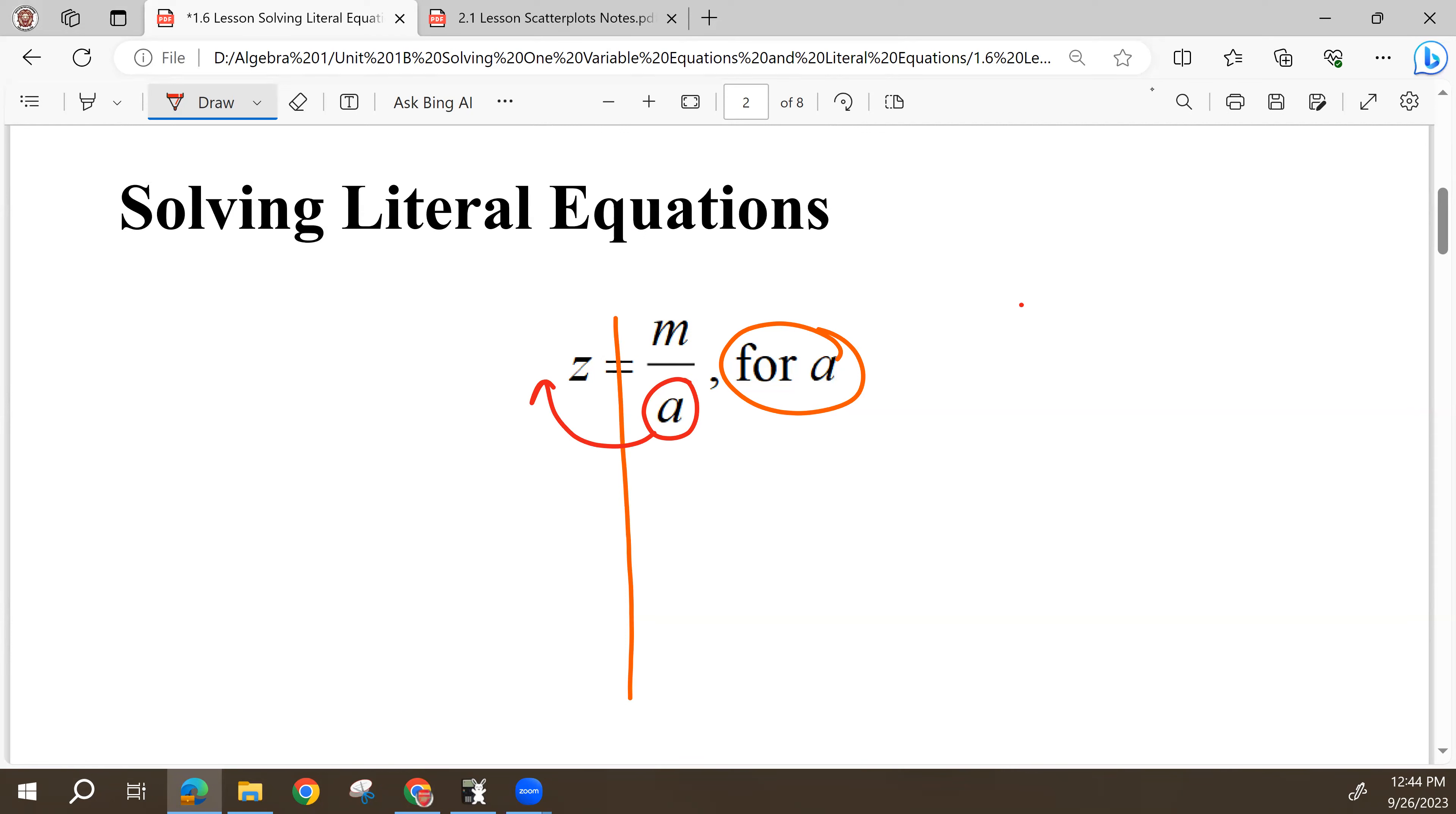The only way we can multiply when we have different letters is by writing them next to each other. So A times Z is just going to look like AZ, and then M is going to be by itself now.